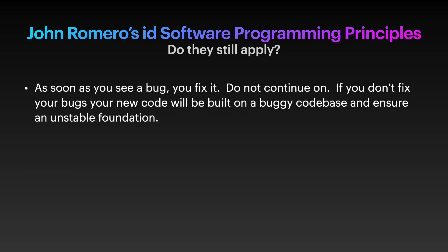Sixth, as soon as you see a bug, you fix it. Do not continue on. If you don't fix your bugs, your new code will be built on a buggy code base and ensure an unstable foundation. This is 100% true in any type of programming. The root cause for the bug you just found may be causing five other bugs you haven't even discovered yet. Fixing it right away will save you a lot of work in the future. The worst thing you can do is to have a post-it note on your monitor listing bugs you're gonna fix later.